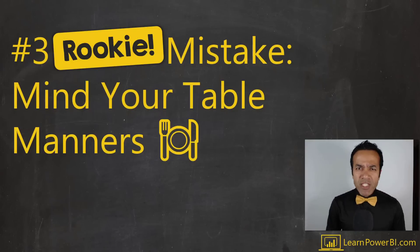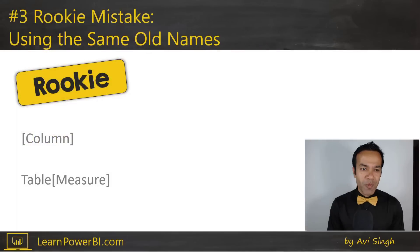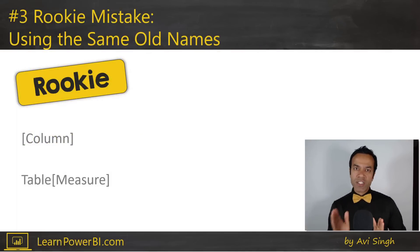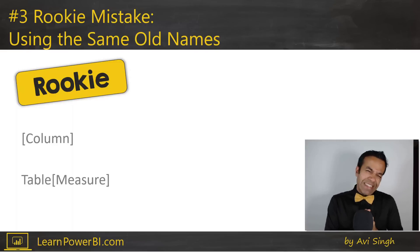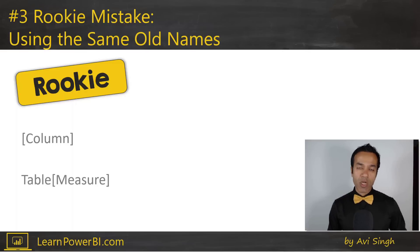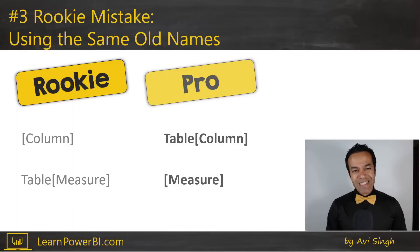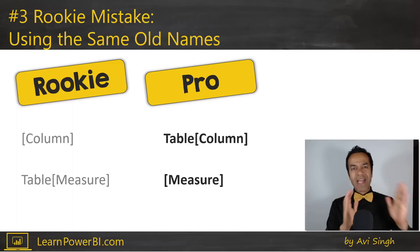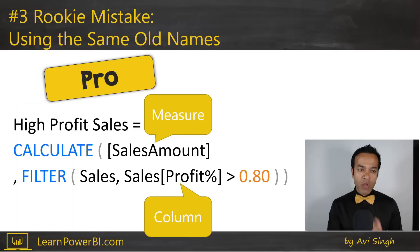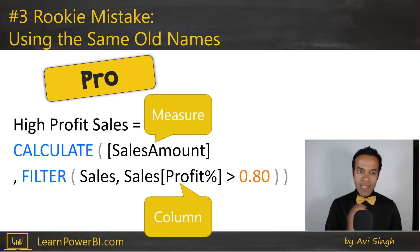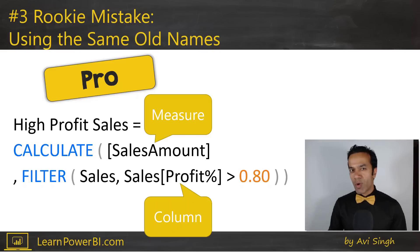Number three rookie mistake: mind your table manners. If I go deeper and start looking at their DAX measures, and I see a column reference without the table name next to it, or a measure reference that does have a table name next to it — that's not a pro move. A pro follows this best practice: columns always reference as table column, and measures never have the table name. For example, 'sales amount' with no table prefix is a measure, while 'table column' format like 'profit percentage' signals a column. This is very important as you go from rookie to pro.